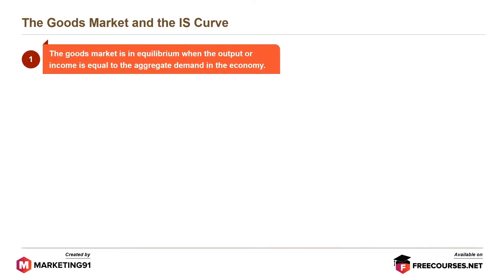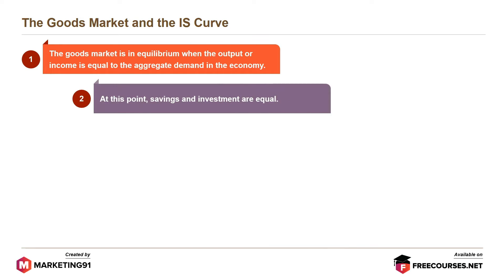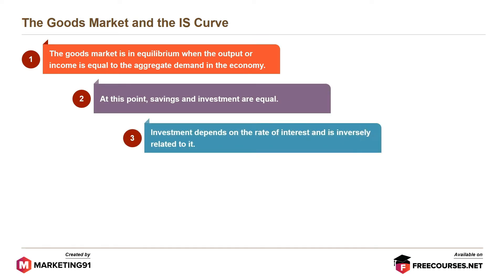The goods market is in equilibrium when output or income is equal to the aggregate demand in the economy. At this point, savings and investment are equal. Investment depends on the rate of interest and is inversely related to it.